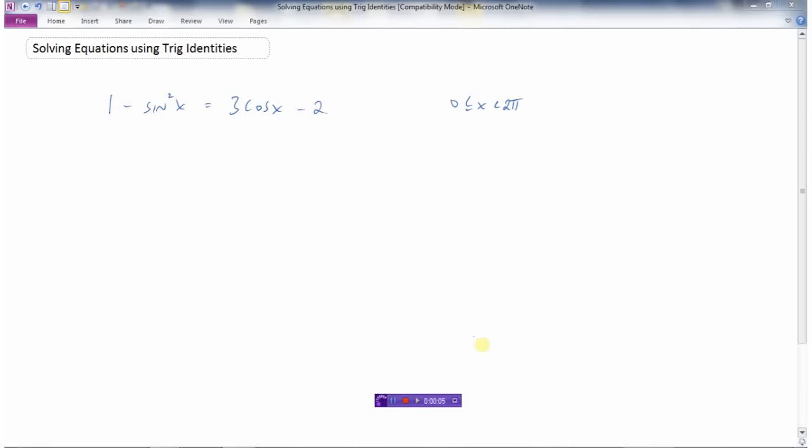In this video, we'll review solving trig equations, but this time we'll need to use some of the identities that we've learned in order to solve the equation. We're solving the equation, trying to find the value of x that makes the left side equal to the right side.